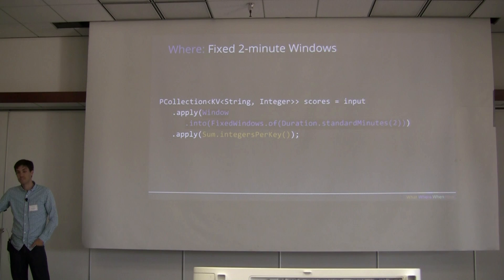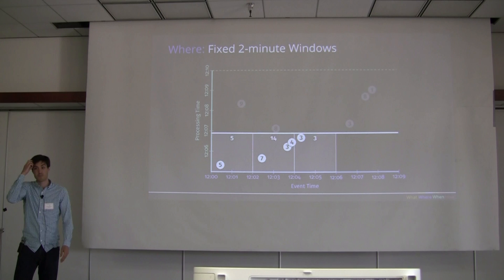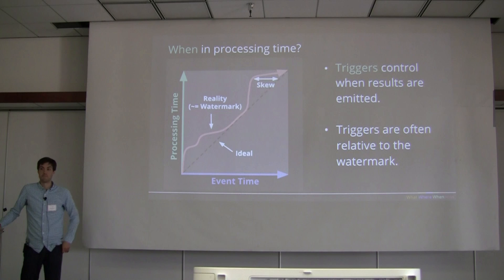There are several kinds of windows. A fixed window is just counting every minute or every hour. A sliding window is like a trailing five minutes or trailing hour. And then sessions we've discussed. The Beam SDK gives you primitives to apply a window to either a stream or a batch of data — you just say I want a fixed window of, in this case, two minutes.